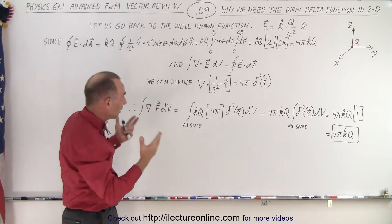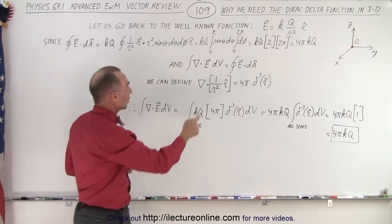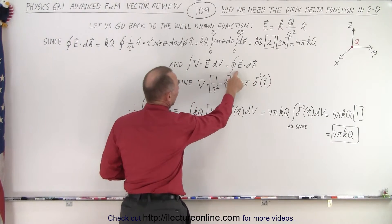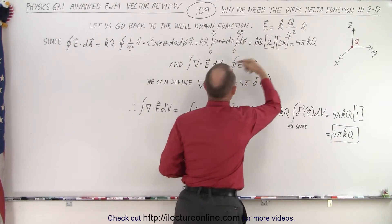And so we looked at that and we go, well how can that be true because they're supposed to be equal to each other? And we can't have 4πkq being equal to zero.